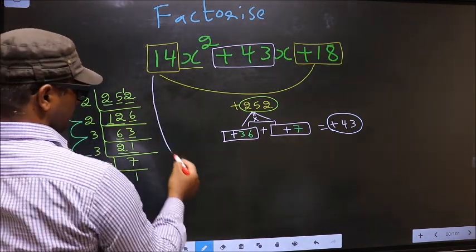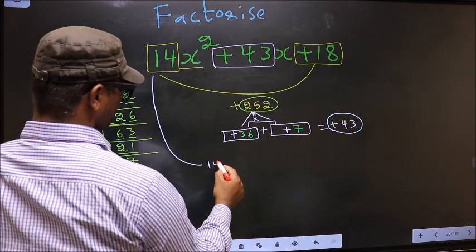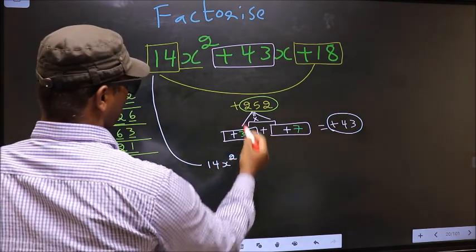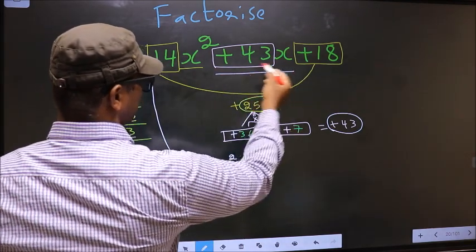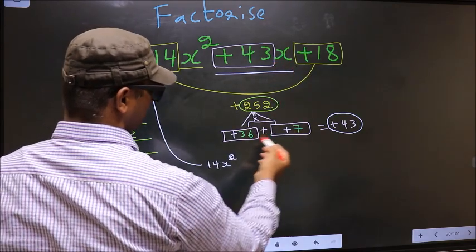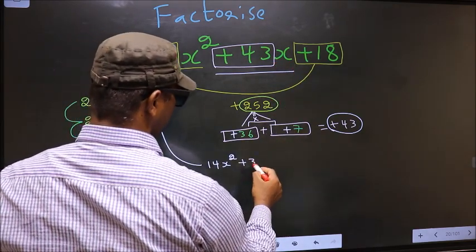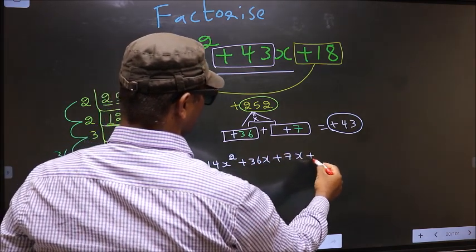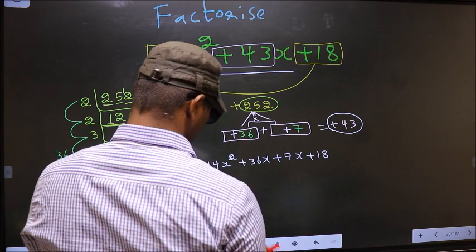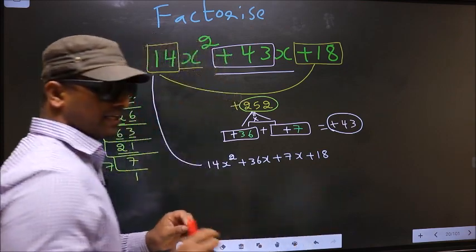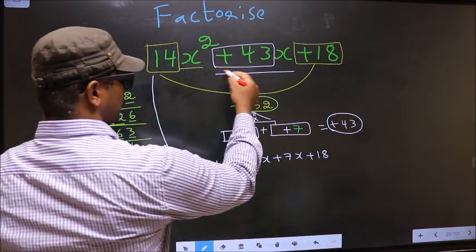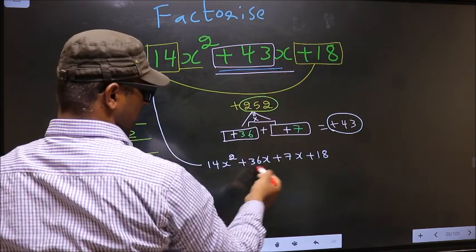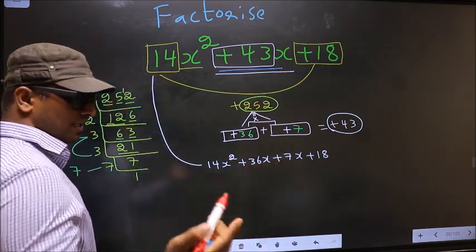Next. Now, we should change this to 14x². In place of +43x, now we should be writing this: +36x + 7x + 18. Did you understand? In place of +43x, I have written this.